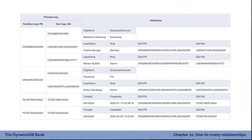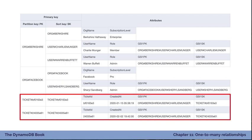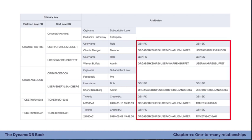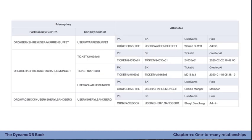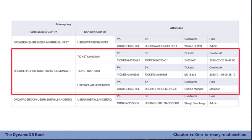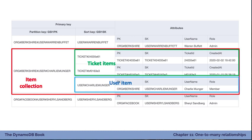Instead, we put the tickets in a different item collection entirely. We add gsi1pk and gsi1sk attributes on all user and ticket items. A user and its tickets share the same gsi1pk. When we create a GSI using gsi1pk and gsi1sk as the primary key, they're located in the same item collection. On gsi1, Charlie Munger has both his user item and tickets in the same item collection, so we can query this secondary index to get both the user and ticket items together.